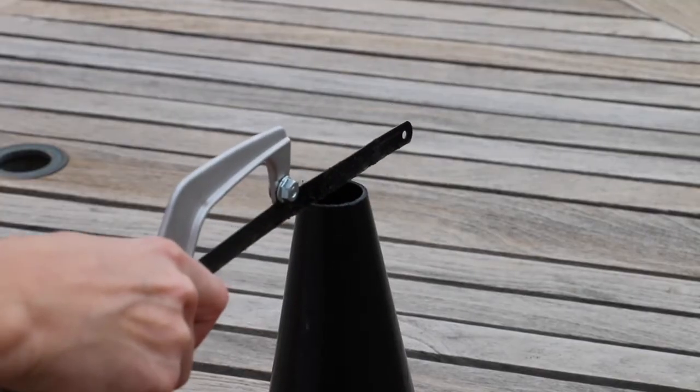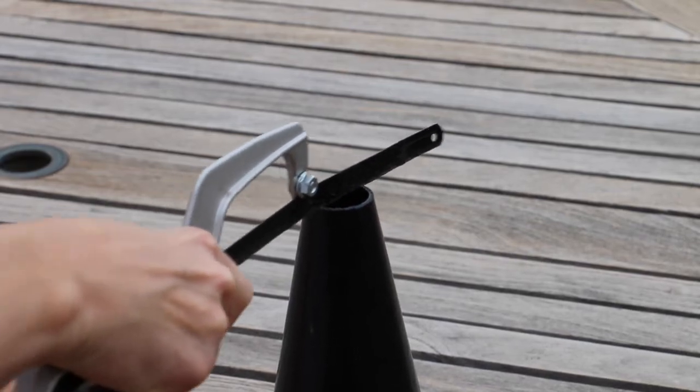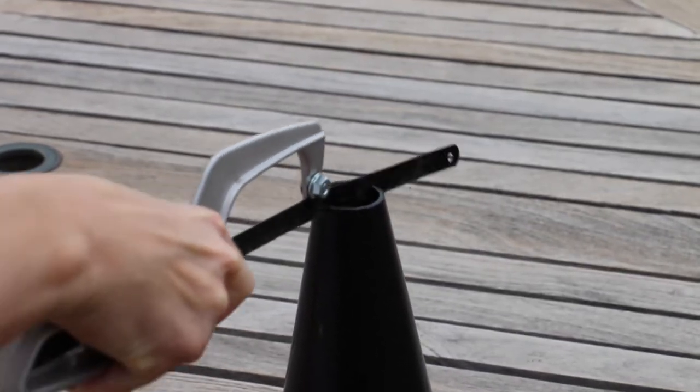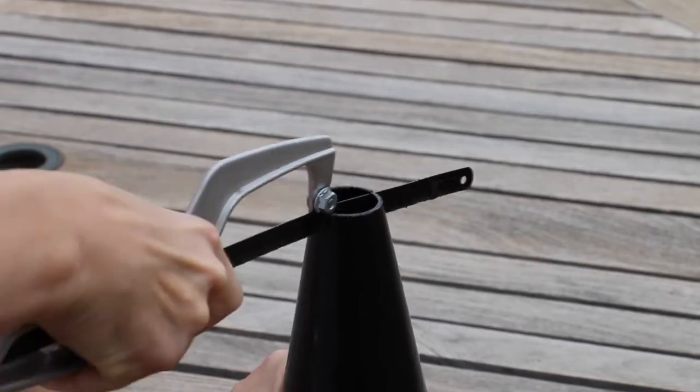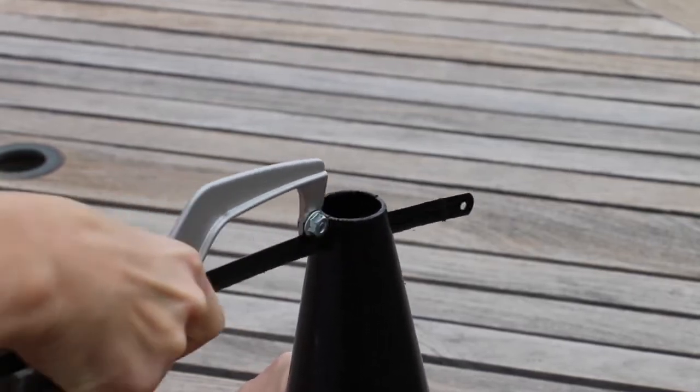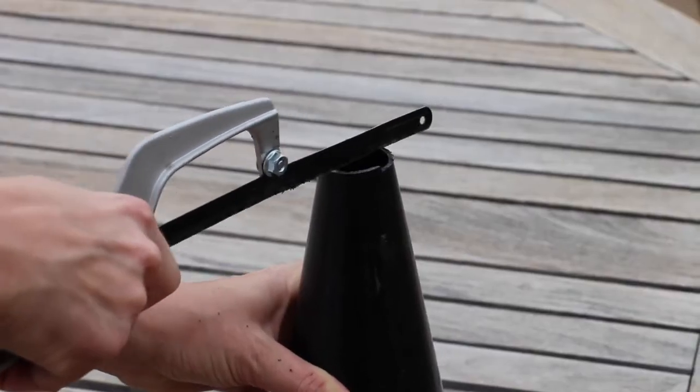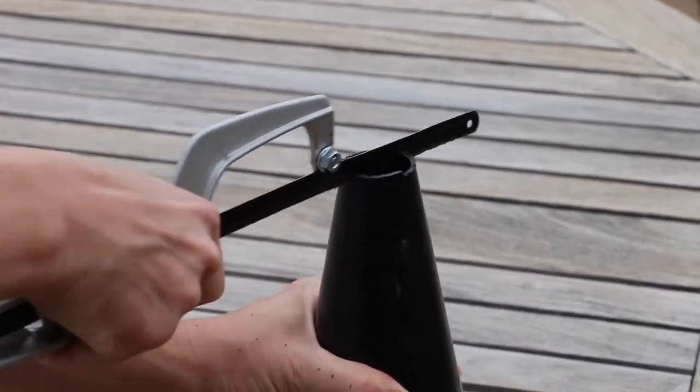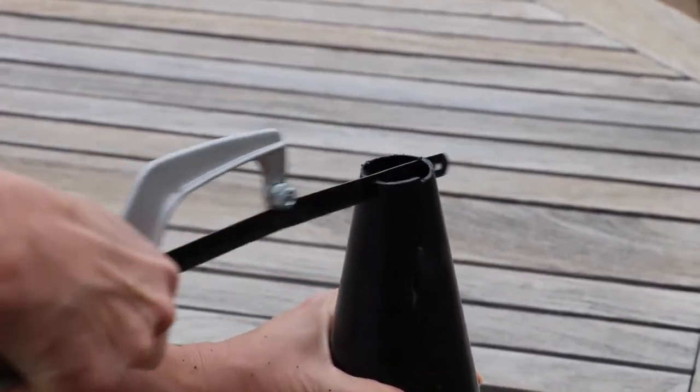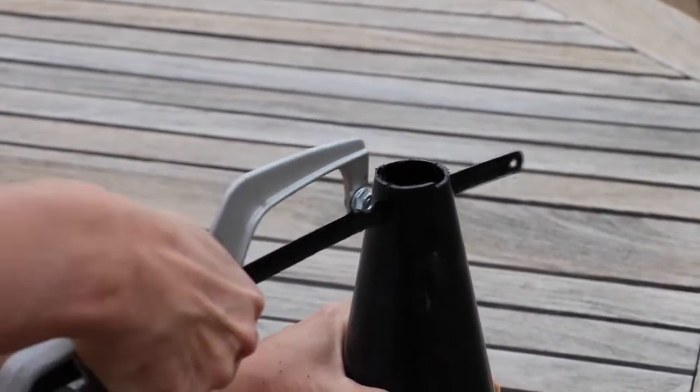Stand the funnel on its wide end and use the hacksaw to cut straight down across the middle of the narrow opening, making your cut about an inch or so deep. This will allow the eyepiece to fit in between the two pieces of plastic. You may need to make several such cuts in order to allow the eyepiece to fit inside the narrow end of the funnel.